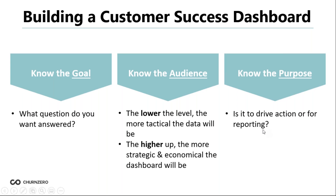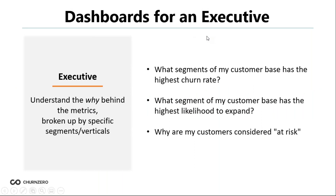Now I want to start looking at individual roles and the key metrics to include for each. The first role I wanted to start with was the executive level. I picked this one first because I still hear executive teams saying customer success just isn't top of mind for us — and often it's not because they're unaware of the metrics or don't have a quick and easy way to report on them. Being able to share these metrics with the executive team gives customer success a louder voice and keeps it top of mind.